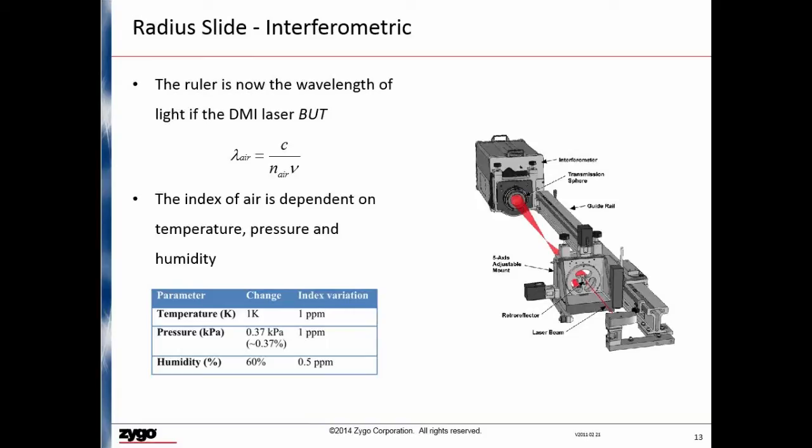The image shown on this slide is an interferometric radius slide where there is a retroreflector placed on the rear of the 5-axis adjustable mount. And the laser beam is right on the optical axis, and that helps to eliminate the Abbe error, and it also guarantees that if you line it up correctly that you're eliminating any alignment errors. But remember, now that we're using an interferometer to measure the distance of travel, the scale factor is the wavelength of light. The wavelength of light, unfortunately, is not constant. The frequency is, but the wavelength is not. And the wavelength varies with the index of air.